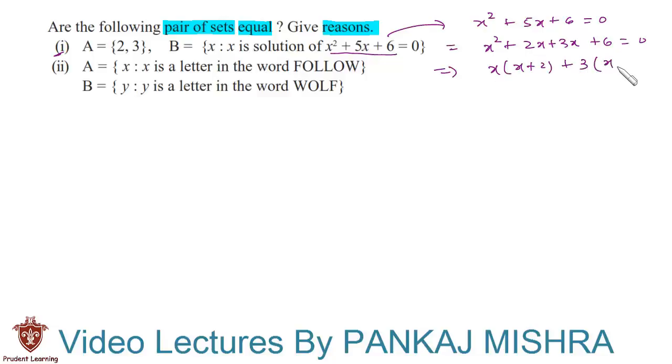In our next step we'll take (x + 2) common, so we have (x + 2)(x + 3) = 0. This means either x + 2 = 0 or x + 3 = 0. This gives us x = -2 or x = -3.